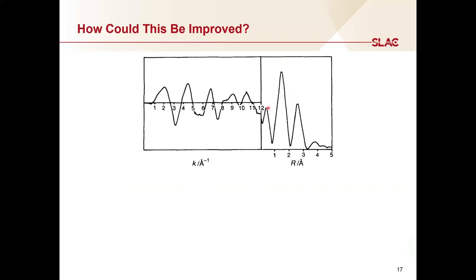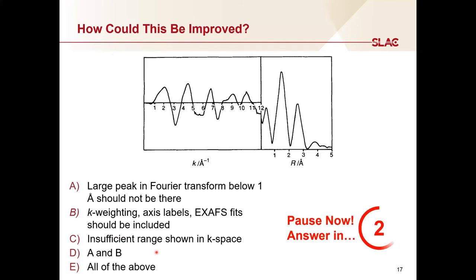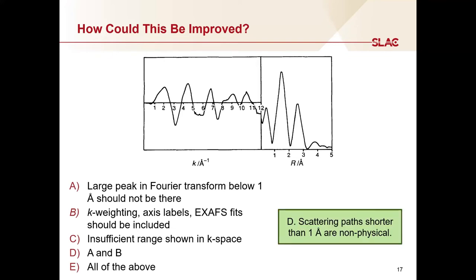This is an example of cobalt k-edge EXAFS plotted in k-space and r-space. The answer is D — both A and B. We've already talked about the basic details listed in answer B. The additional point here is that you should not have scattering paths shorter than 1 Angstrom. Metal-carbon, nitrogen, or oxygen bonds will certainly be longer than this. As a reference, the carbon-carbon bond length in acetylene, which is a very short carbon-carbon bond, is 1.2 Angstroms. Seeing a large peak below 1 Angstrom indicates that there may be an issue in the background subtraction from the EXAFS.